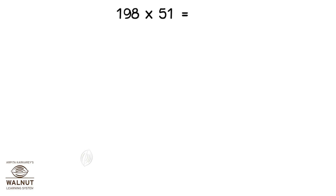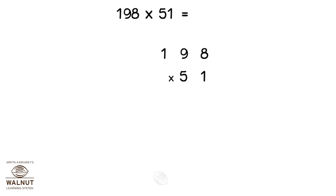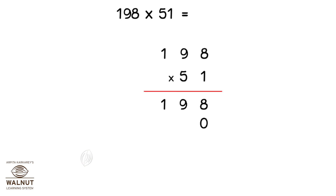Look at this multiplication too — it goes the same way. We write the numbers one below the other. Multiply 198 by 1, then put in the 0, and multiply 198 by 5. Add the products, and we get our answer.